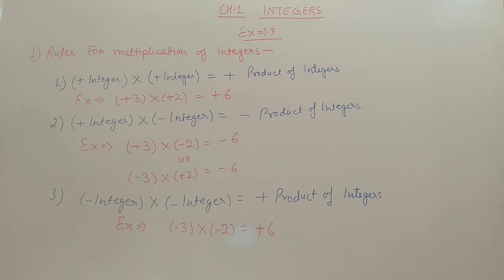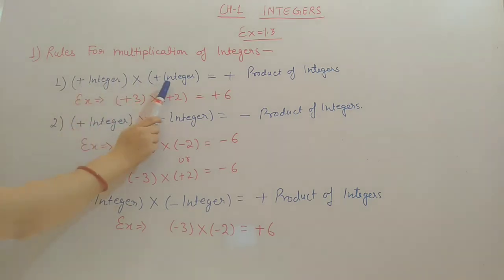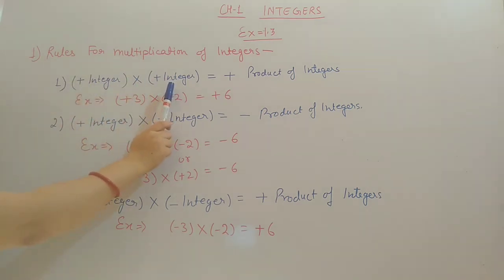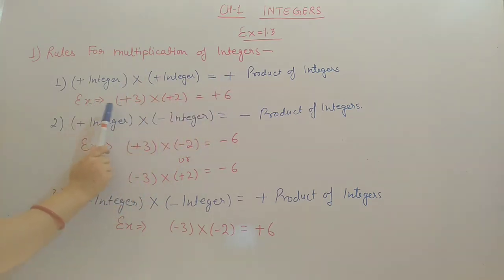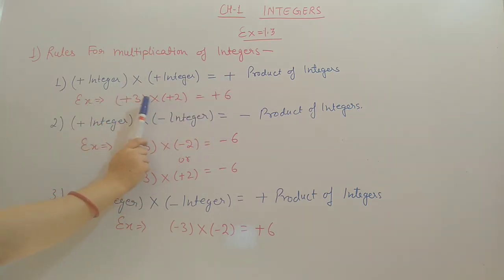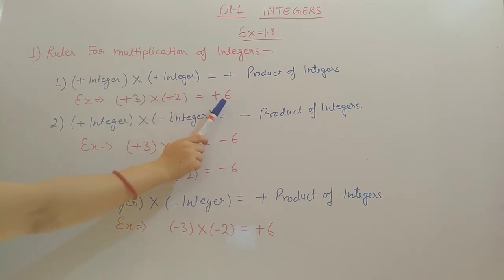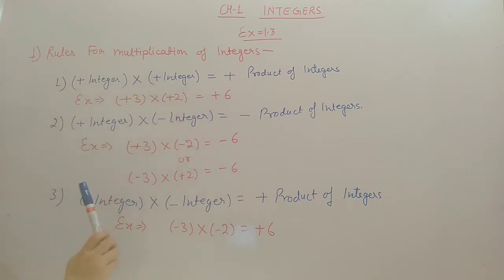The first rule is when you are multiplying a positive integer with a positive integer. In that case you have to multiply both the integers and the symbol will come plus. For example, plus 3 multiplied by plus 2: 3 into 2 will become 6 and plus into plus will become plus 6.